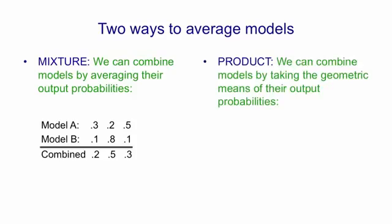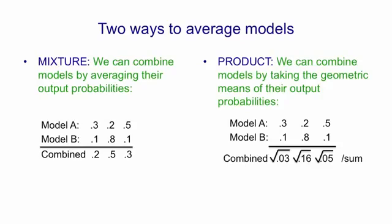A different way of combining models is to use a product of the probabilities. Here we take a geometric mean of the same probabilities. So model A and model B again assign the same probabilities as they did before. But now what we do is we multiply each pair of probabilities together and then take the square root. That's the geometric mean.